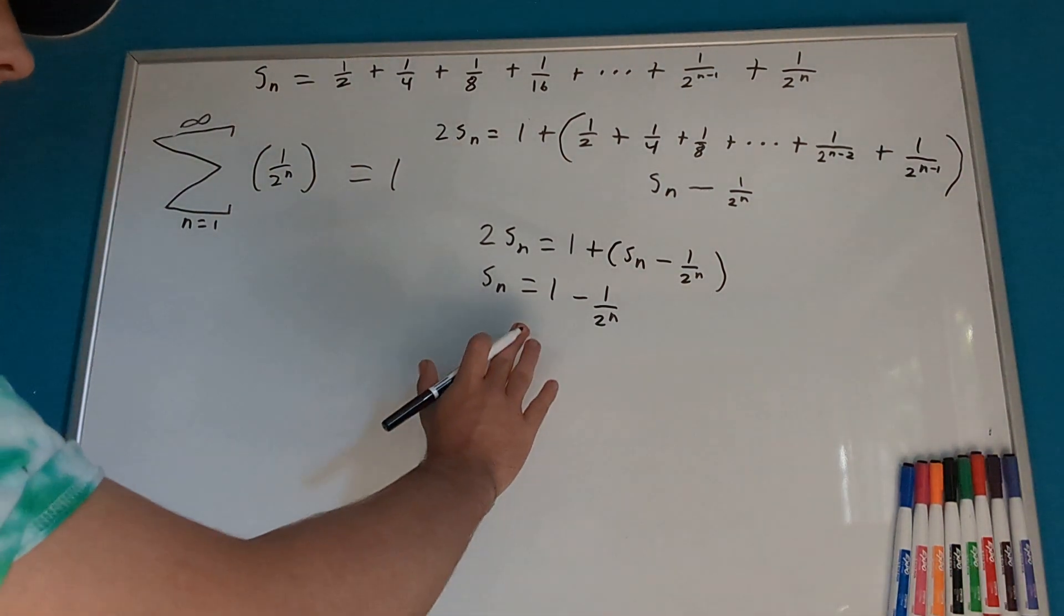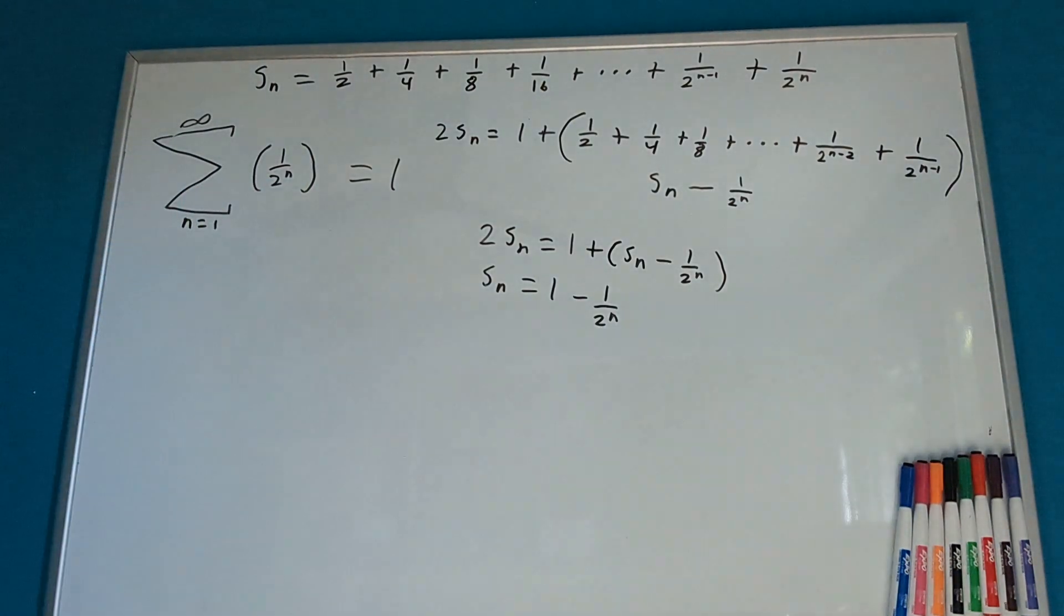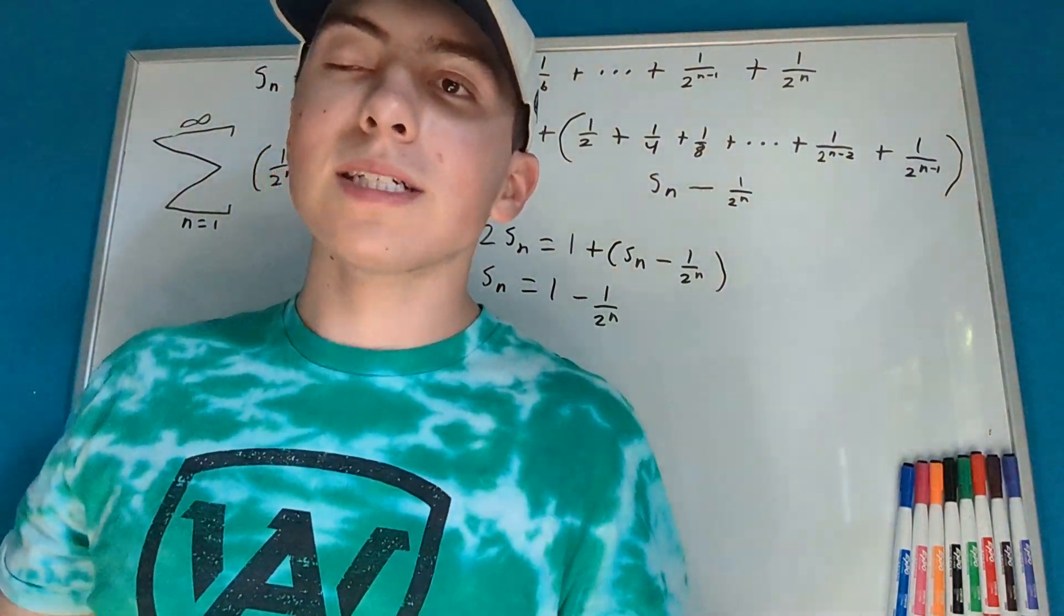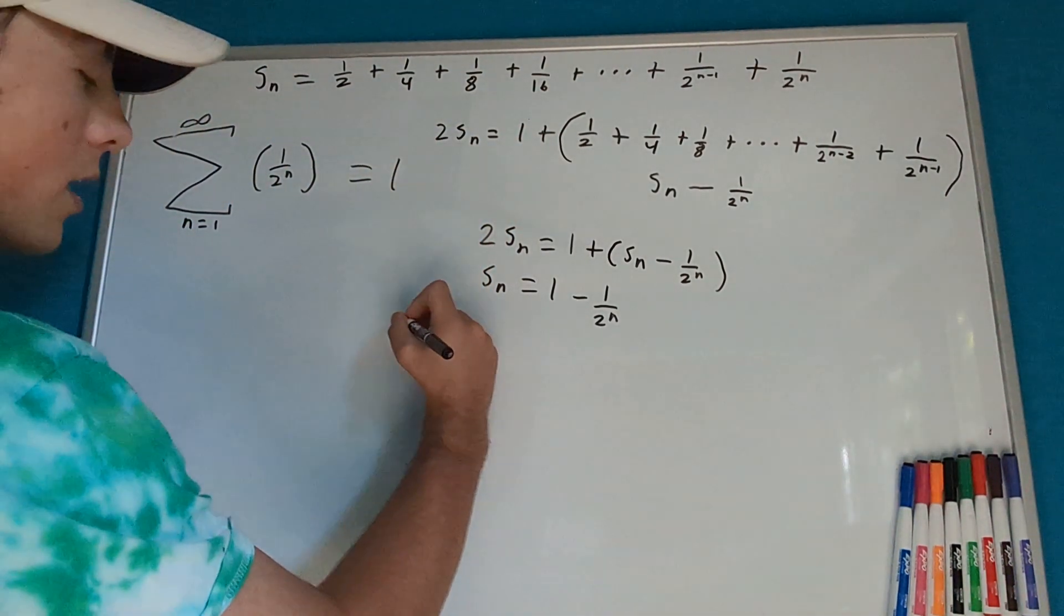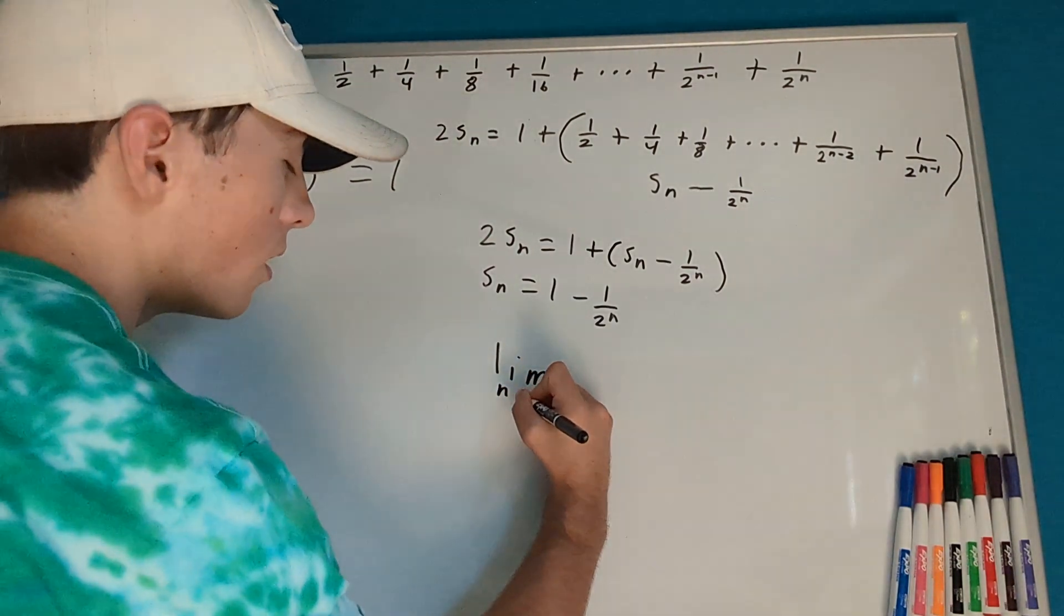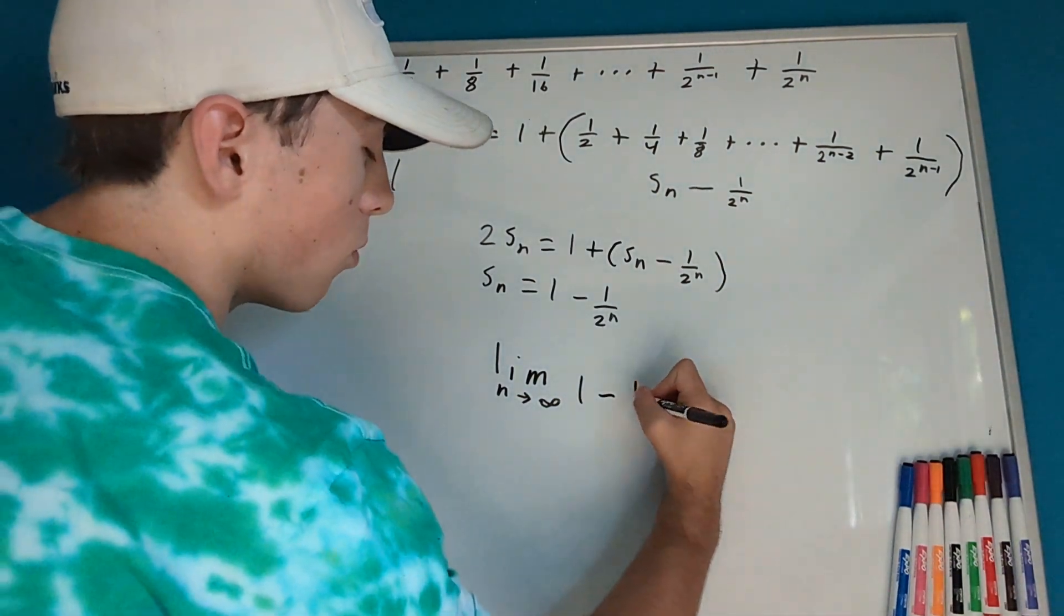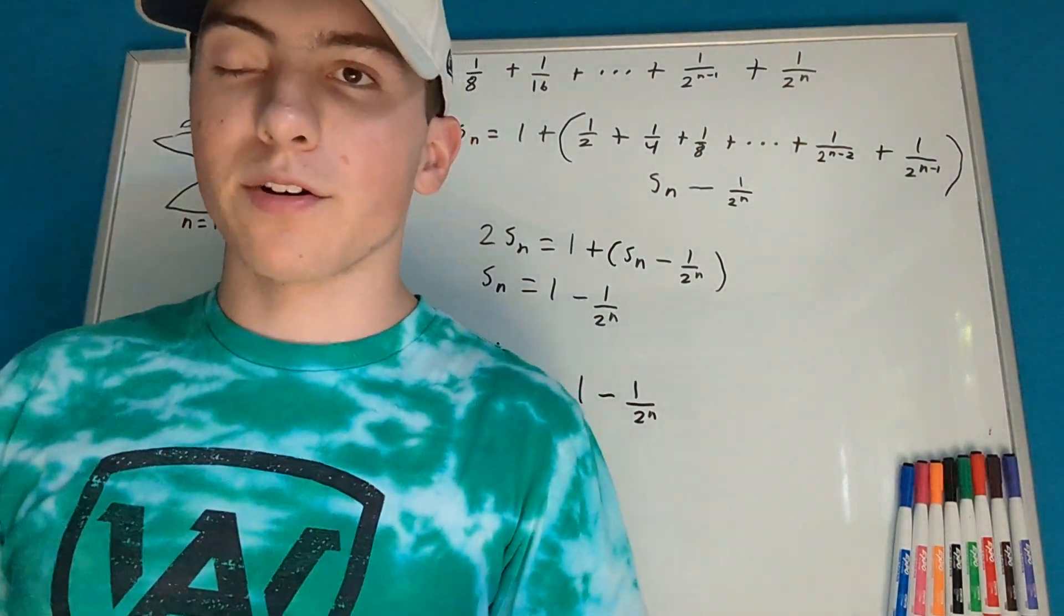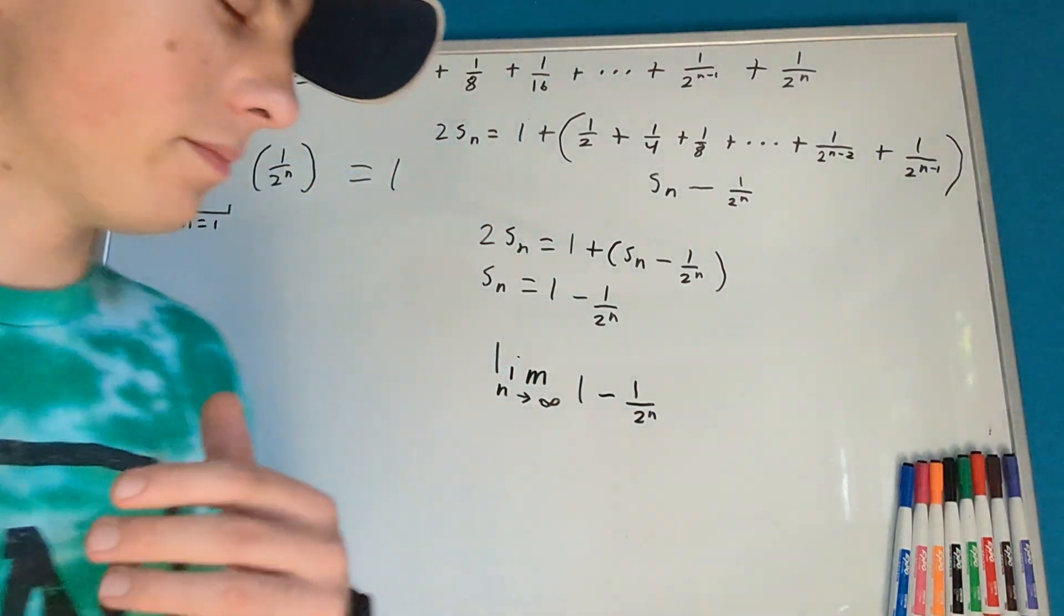Now, we have this, but what are we trying to do here? Well, we're trying to know what happens as n goes to infinity. So, what we can do for this is we can take a limit, and we're going to take a limit as n approaches infinity. So, here we can rewrite this as the limit as n approaches infinity of 1 minus 1 over 2 to the n.